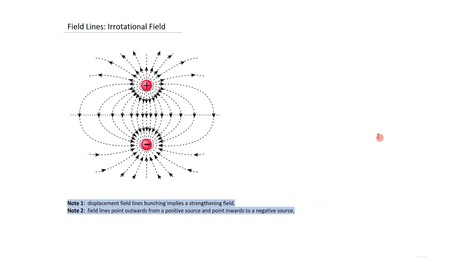For the irrotational field case: with a positive and a negative charge, field lines point outwards from the positive charge and inwards toward the negative charge, with lines from the positive charge terminating at the negative charge. The midline between the two charges is perpendicular to the field. Bunching of field lines implies a strengthening field as you approach either charge.